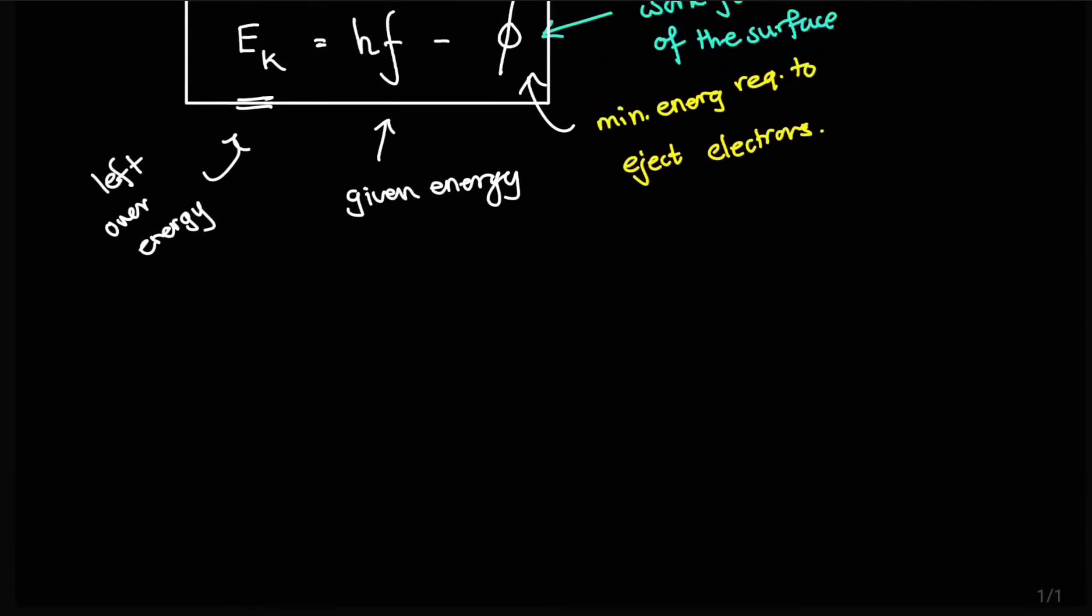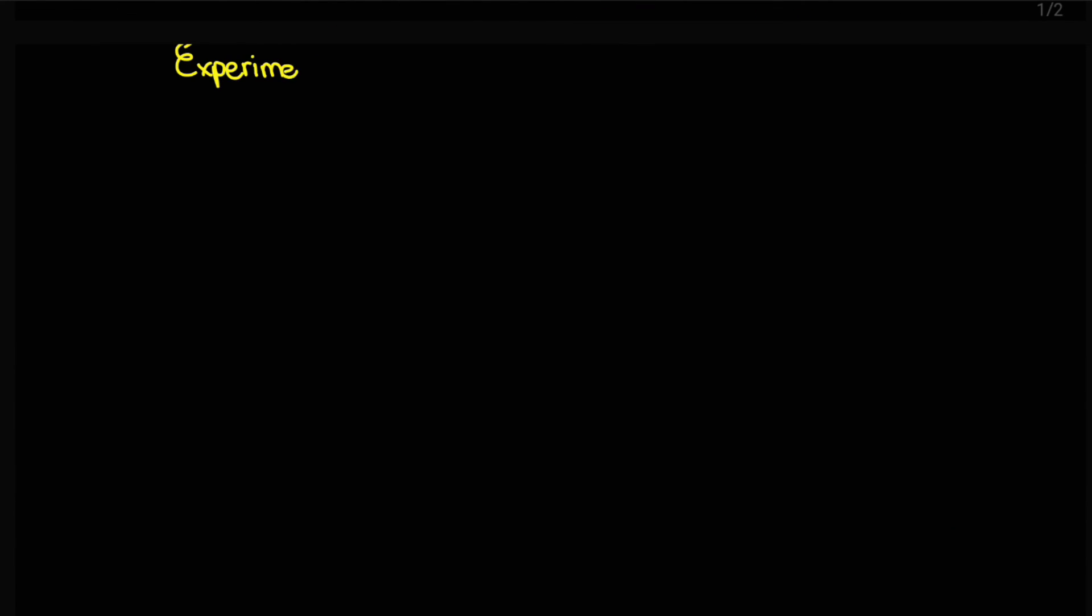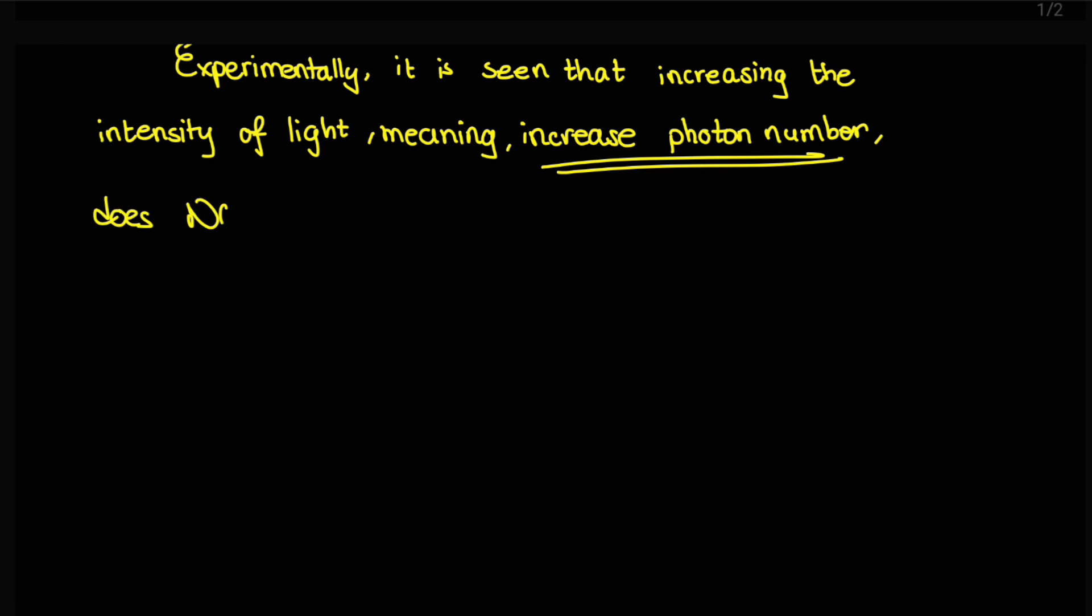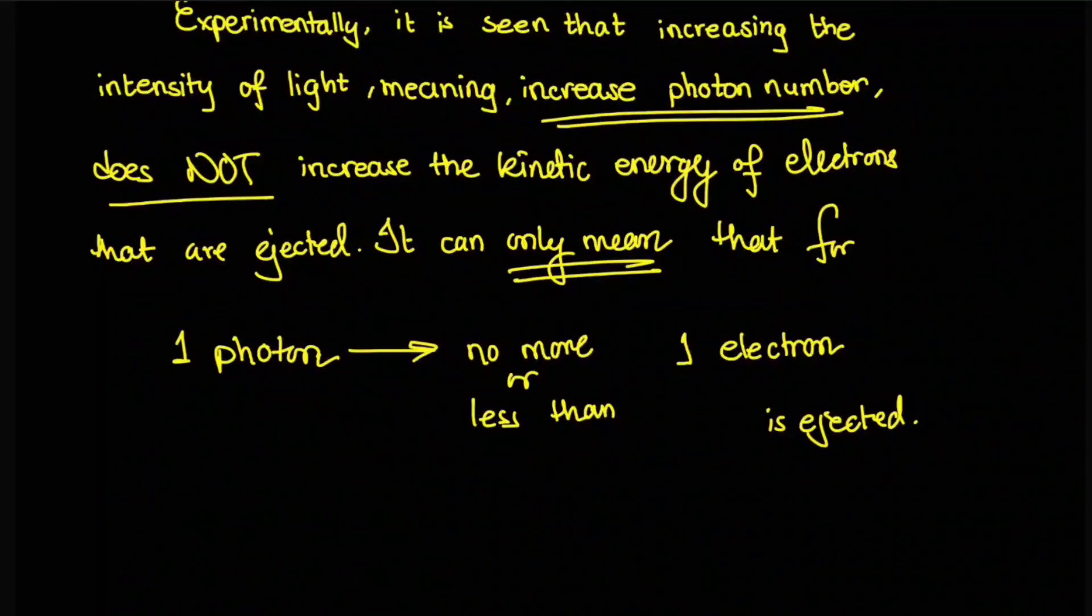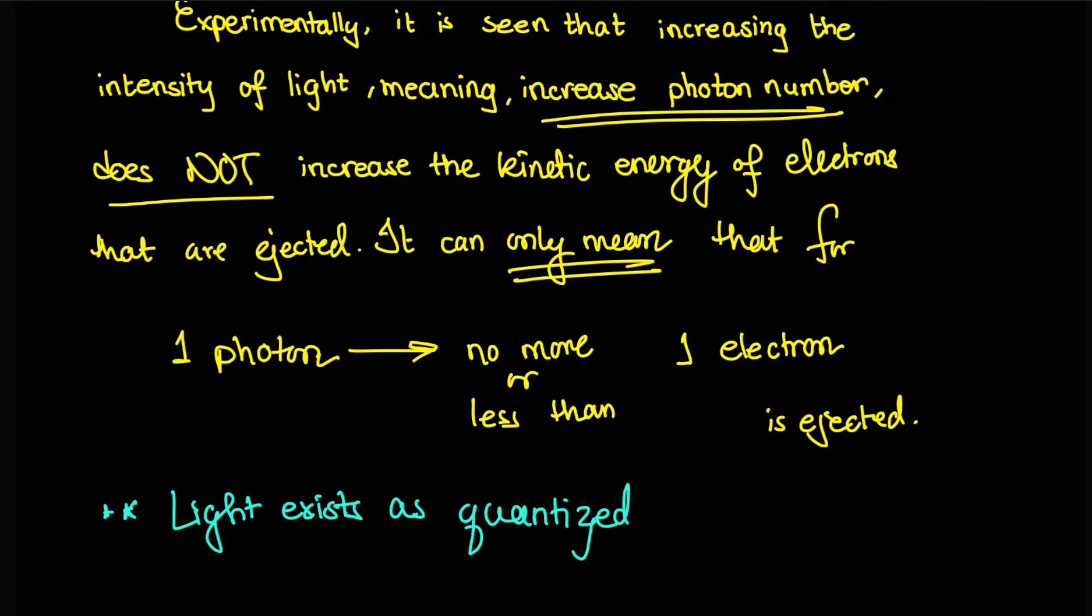What is actually the final significance of this entire experiment or the photoelectric effect? Experimentally, it is seen that increasing the intensity of the light, meaning increasing the photons, does not actually increase the kinetic energy of electrons that are ejected. It can only mean that for one photon, or for every photon, no more or no less than one electron is ejected. Which means that if you have like five photons, it would only mean that five electrons are ejected. This actually proves that light exists as quantized packets or quanta, which Albert Einstein actually explained through his quantum theory.